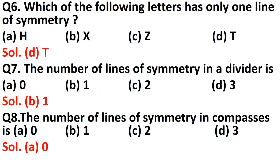Question number six: which of the following letters has only one line of symmetry, whether vertical or horizontal? H has two lines of symmetry — one vertical, one horizontal. X also has two lines of symmetry. Z does not have any line of symmetry. The correct answer is option D, that is T — T has only one line of symmetry.